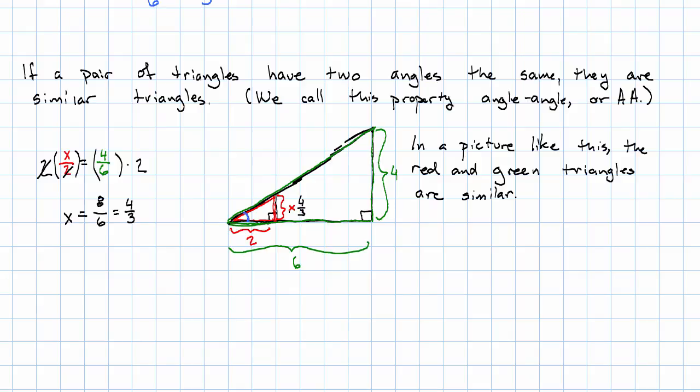This is the sort of picture with similar triangles we're going to be most interested in—the one where we have one right-angled triangle inside another. We know they're similar because the right angles are the same size and the angles that are actually the same angle are obviously the same size.